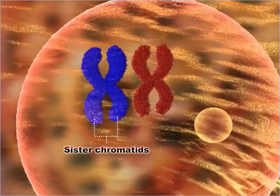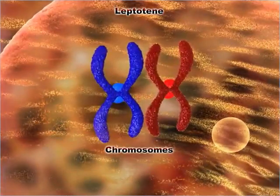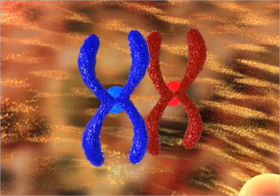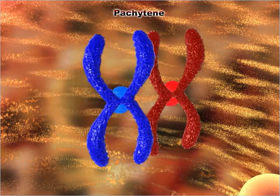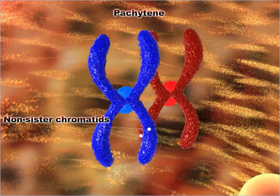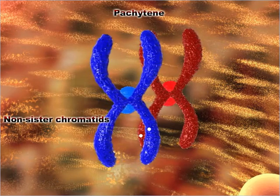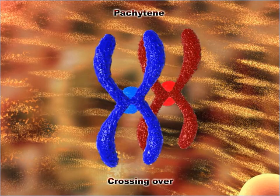Now let us look at the different stages of prophase one in detail. During leptotene, the chromosomes condense and become visible. The zygotene phase is followed by pachytene, during which chromosomal crossing over takes place between the non-sister chromatids of the homologous chromosomes. This crossing over is what makes each individual unique.